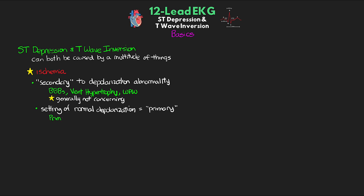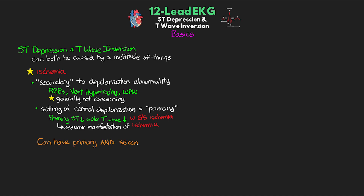If we have primary ST depression and T-wave inversion and the patient is exhibiting signs and symptoms of ischemia, then we need to assume that these are manifestations as a result of ischemia. We can have both primary and secondary ST depression and T-wave inversion that can complicate the picture. Typically, we're going to see deeper ST depression and T-wave inversions, especially compared to previous EKGs where only the secondary is present, and we're usually going to see these as disproportionate when compared to the size of the QRS complex.